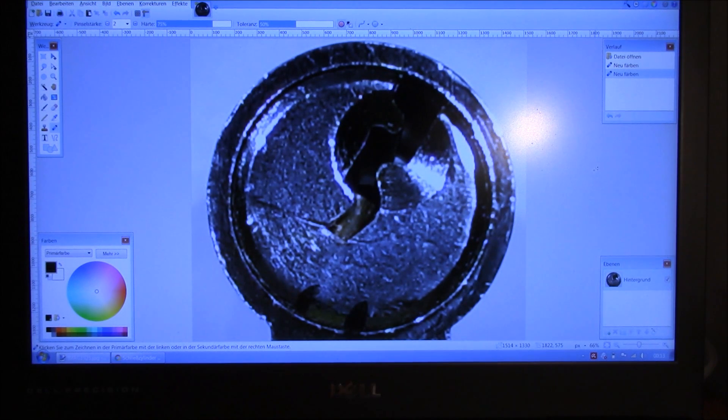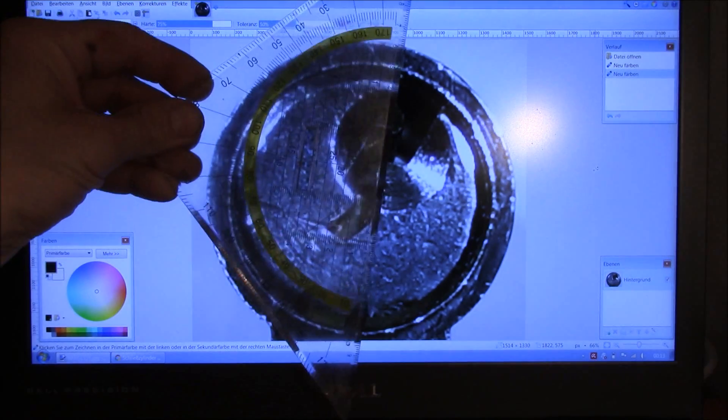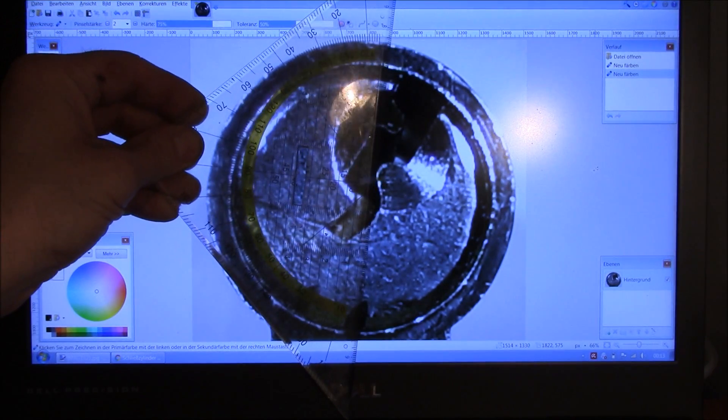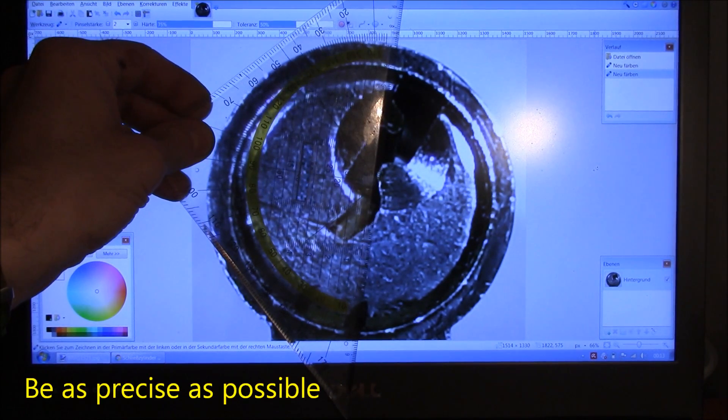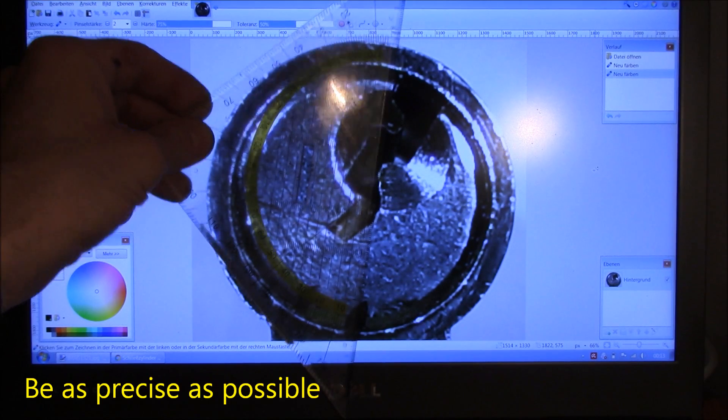And what you can do now in order to get the angle of the false set is you simply print it out. Then you take an angle ruler and just measure the angle of the false set. So it should be easily possible.